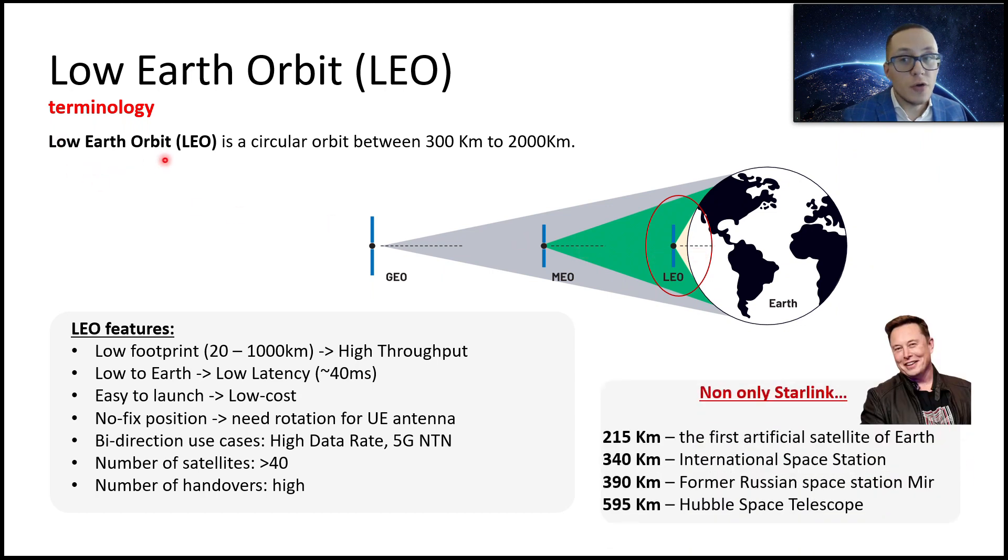And actually, low earth orbit, this is not only about Starlink. This is also about, for example, first satellite was low earth orbit. First international space station, first man in the outer space, low earth orbit. Hubble Space Telescope was also flying in the low earth orbit. This is very popular orbit for different use cases.